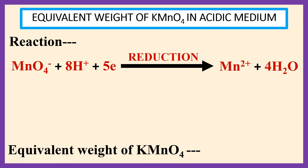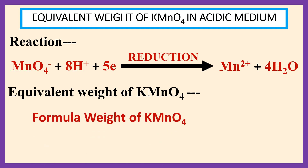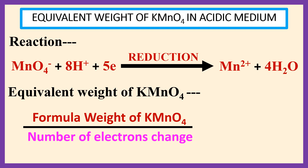So, the equivalent weight of KMnO₄ is equal to the formula weight of KMnO₄ divided by the number of electrons changed, which equals 158 divided by 5. Here, 158 is the formula weight of KMnO₄ and 5 is the number of electrons changed, giving us 31.6.